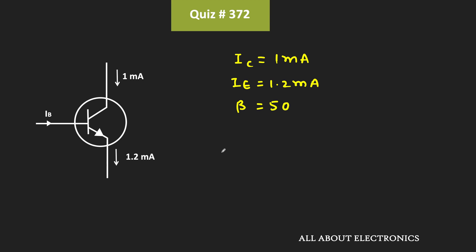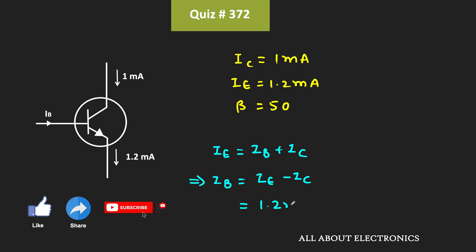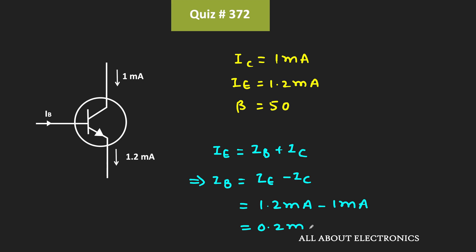For the transistor, we know that this emitter current IE is the summation of the base current and the collector current. Since we know the value of this emitter and the collector current, we can easily find this base current. That means IB is equal to IE minus IC, that is 1.2 mA minus 1 mA, which equals 0.2 mA.